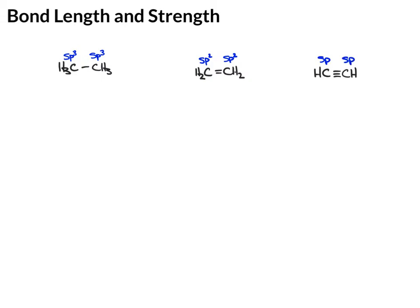And we can actually break this down into the percentage of character. So in the case of sp3, that orbital is one part s, three parts p, so we would say 25% s, 75% p.